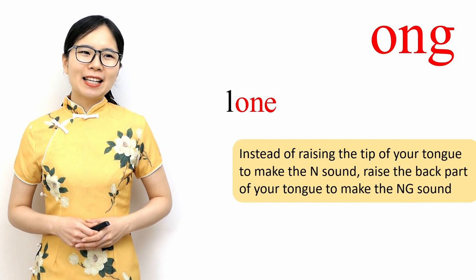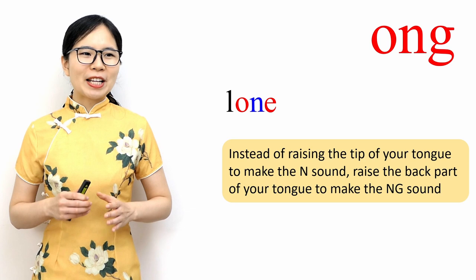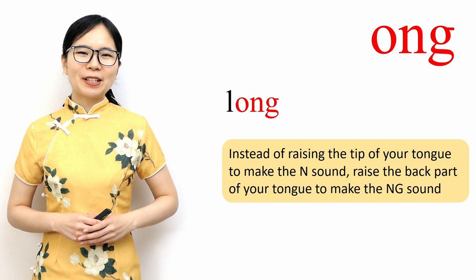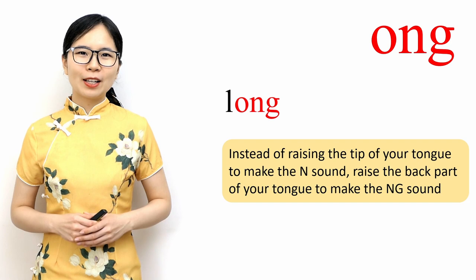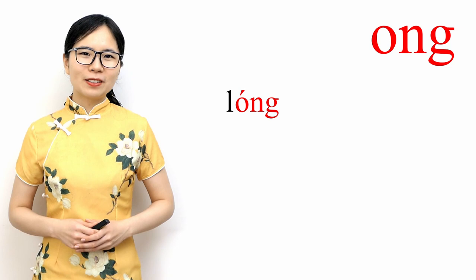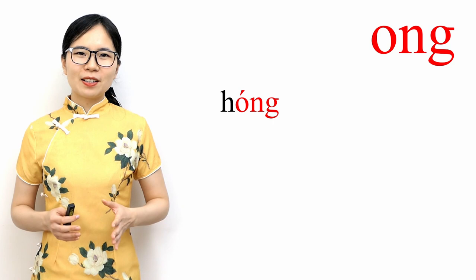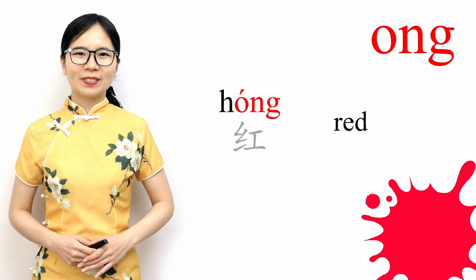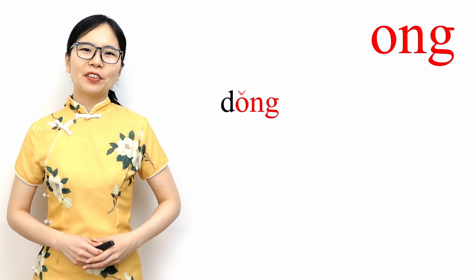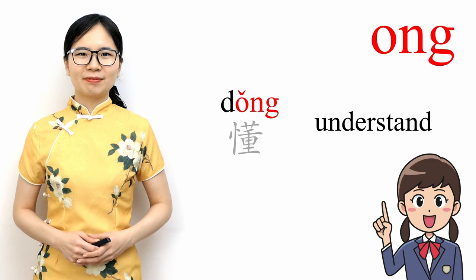Next is the compound final 'ong'. It sounds like the 'on' in 'long', except that instead of raising the tip of your tongue to make the 'n' sound, you should raise the back part of your tongue to make the 'ng' sound. Note that the 'g' sound is very soft. Please repeat after me: 'long'. If I add the second tone to this syllable I get 'lóng', which means dragon. Switching to the initial 'h', we get 'hóng', which means red.